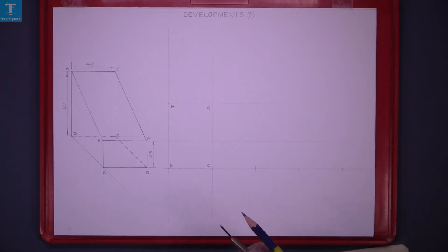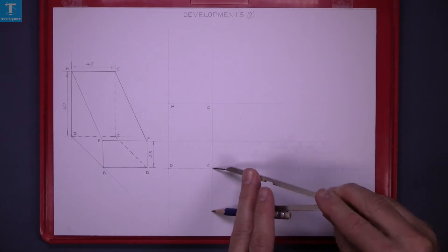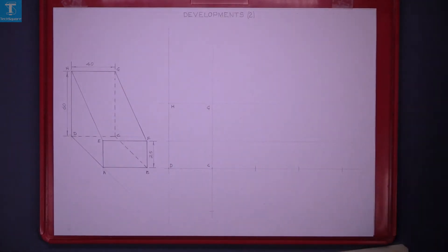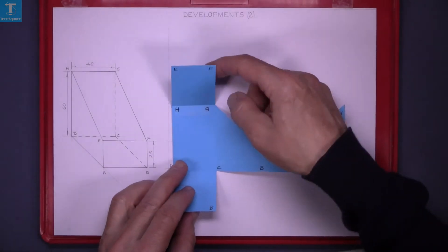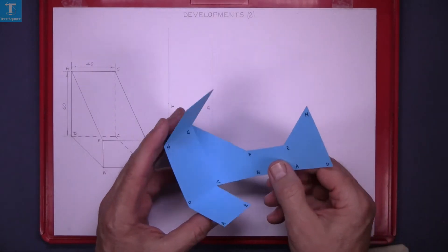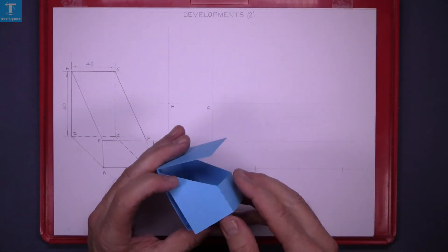For the base, just mark it down. For the base we cannot mark for the top because the top is longer. The top has to be long enough to go to the full length of the sloping line.